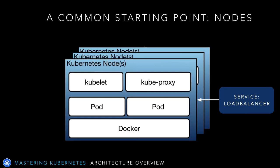Since containers and container orchestration technologies de-emphasize the role of the individual system — whether that's a server, a VM, or even a container — it can be difficult to get a starting point when exploring Kubernetes architecture. The pod and deployment are relatively important concepts from previous lectures, but let's think a little bit lower level for now and start with a familiar concept: the server or the virtual machine.